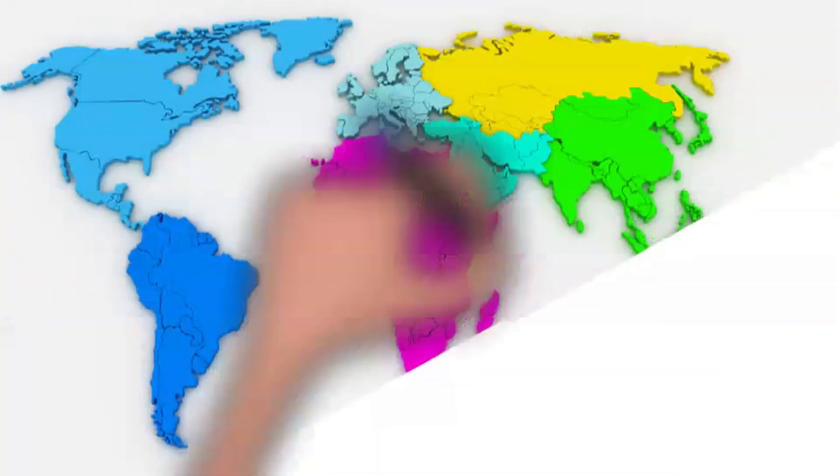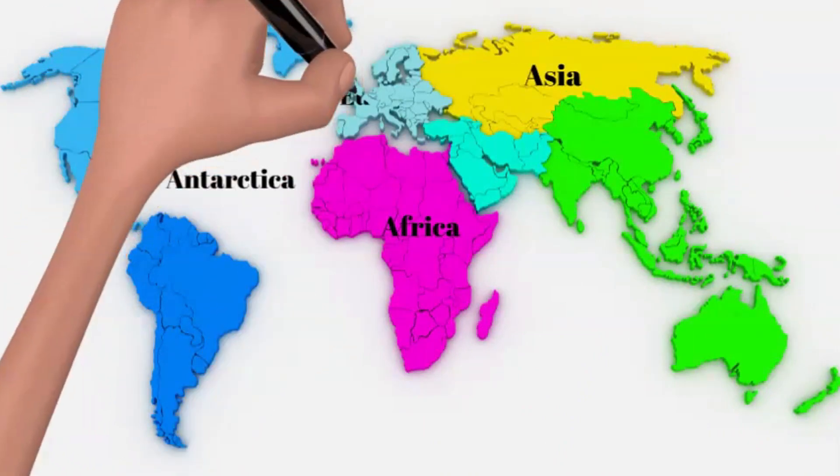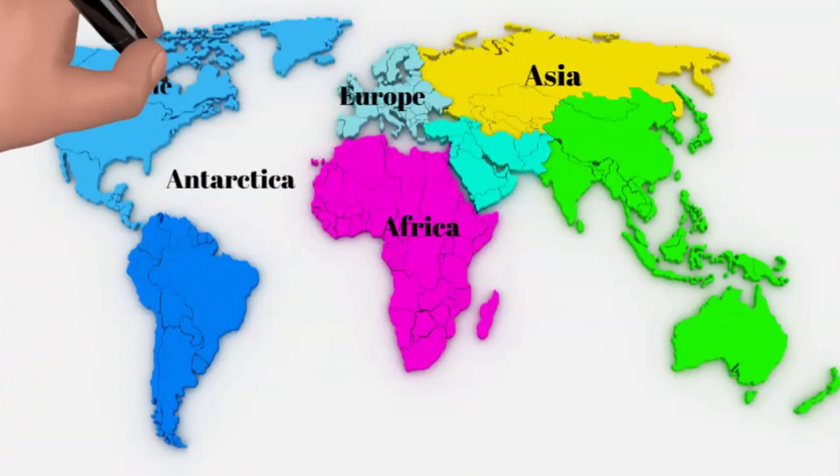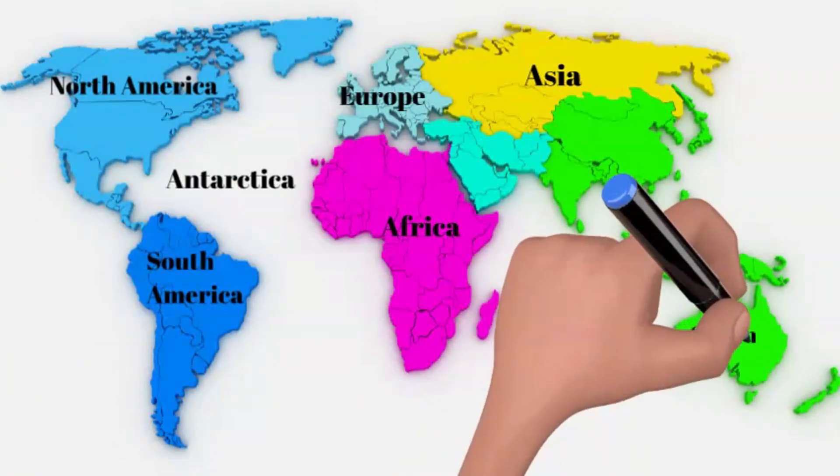The seven continents on our planet are Africa, Asia, Antarctica, Europe, North America, South America, and Oceania also referred to as Australia.